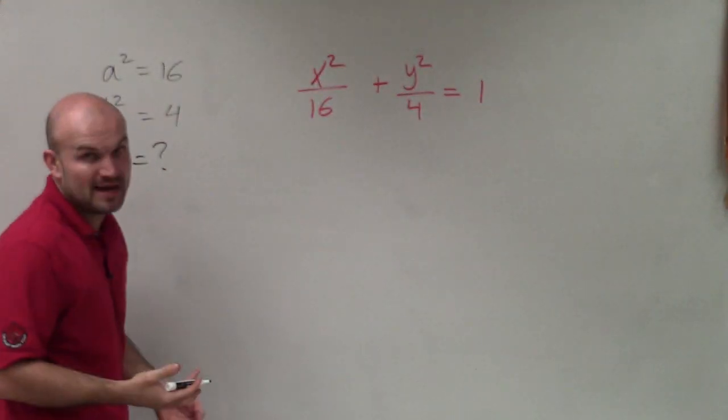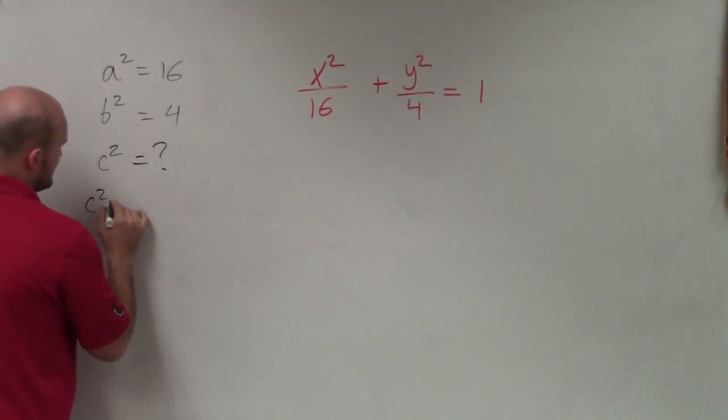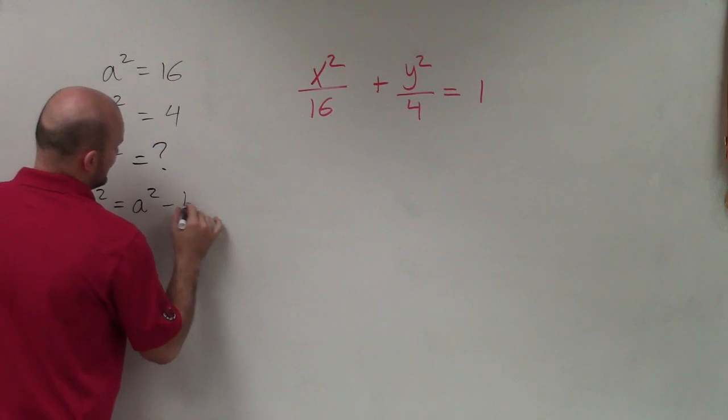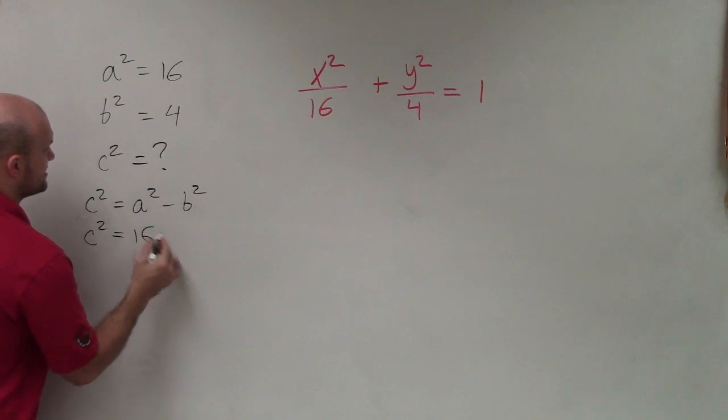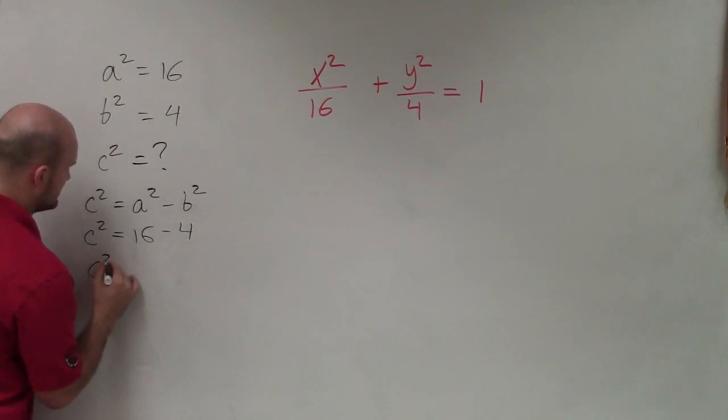Now, to find c squared, we have a formula that we have to apply. c squared is equal to a squared minus b squared. So now I go and plug that in. So I have c squared equals 16 minus 4. c squared is going to equal 12.